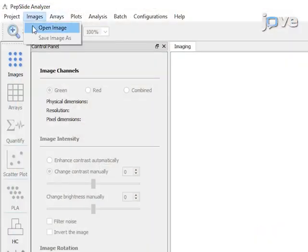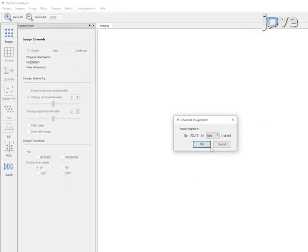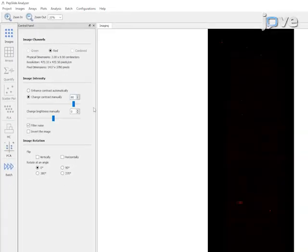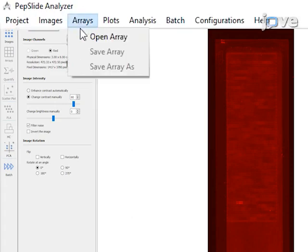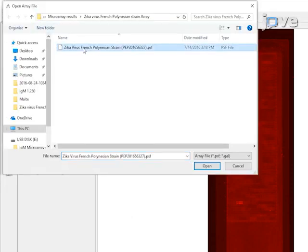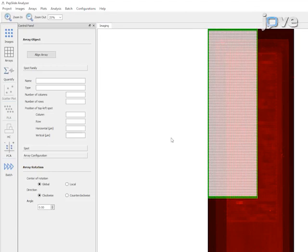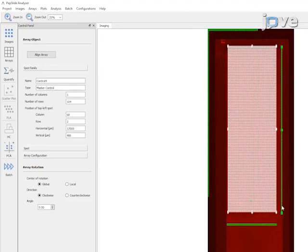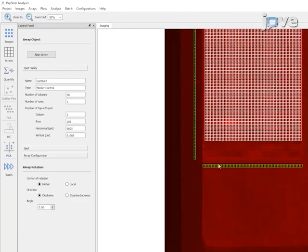To analyze the data, open the raw image. Then open the array grid file. Align the array grid to the scan image with the computer's mouse or keyboard arrow keys.